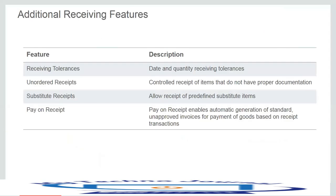Additional receiving features include receiving tolerances — we can define these at the organization, item, or order level. These checks include over-receipt tolerance, early and late receipt tolerance, and others. Another feature is unordered receipts — we can receive items from a supplier when we do not have or do not know a corresponding purchase order number. These items are tracked in the system while a buyer specifies which purchase order to use, or until the items are returned to the supplier.